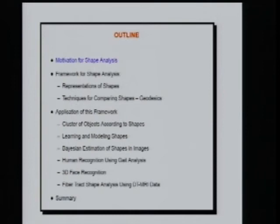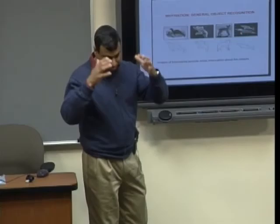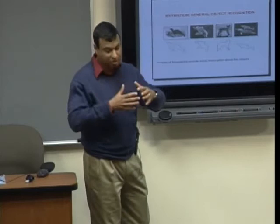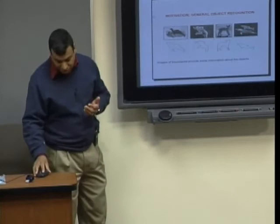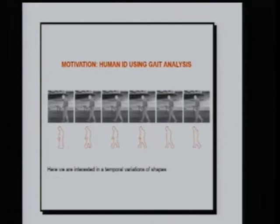Looking at objects in images, if we extract the contours and ask what information we get from the shapes of these contours, we do get some information — maybe we can classify the object in a broader category using shape information. One specific problem is human ID recognition from a distance: we have videos of people walking, we extract the sequence of shapes, and we want to classify this whole process — a stochastic process of shape — rather than studying individual shapes.